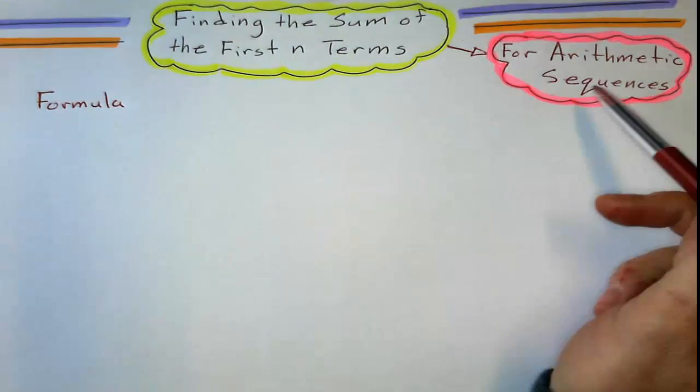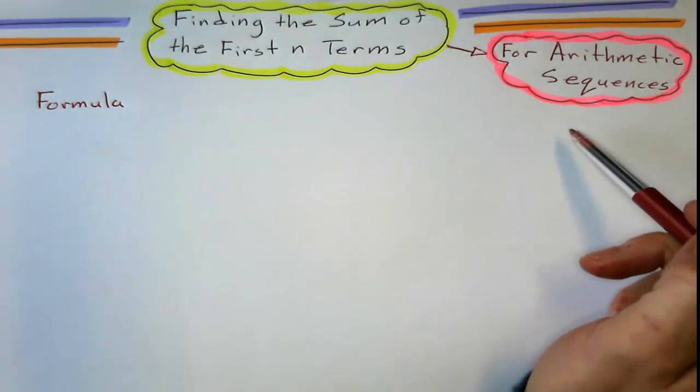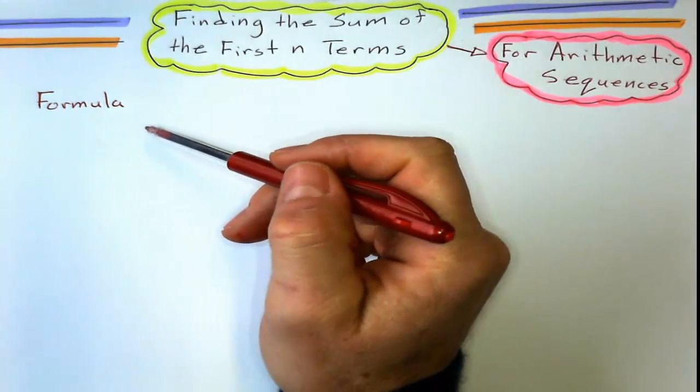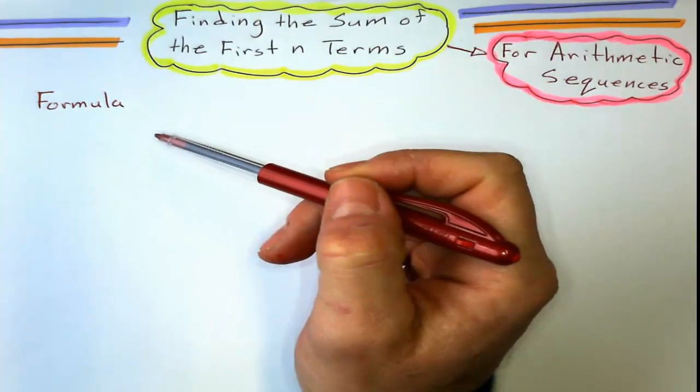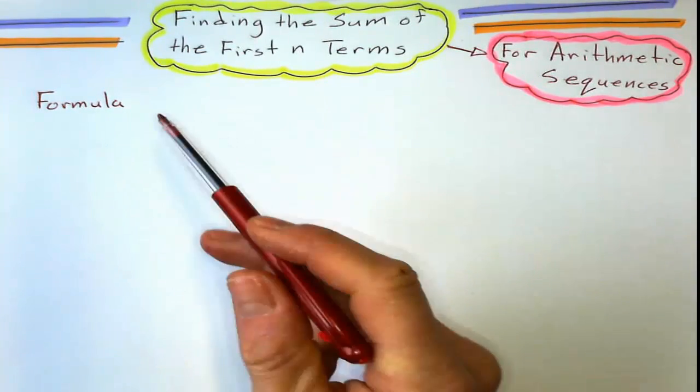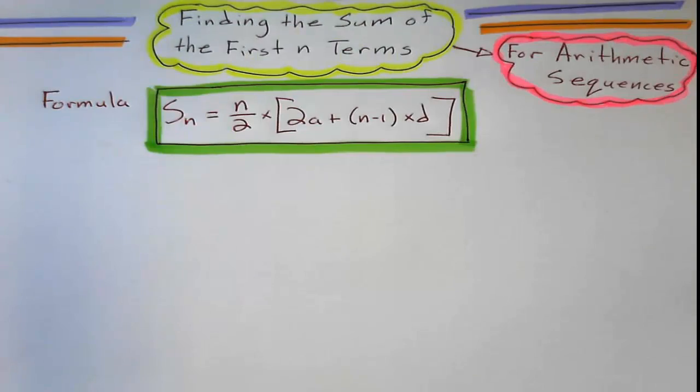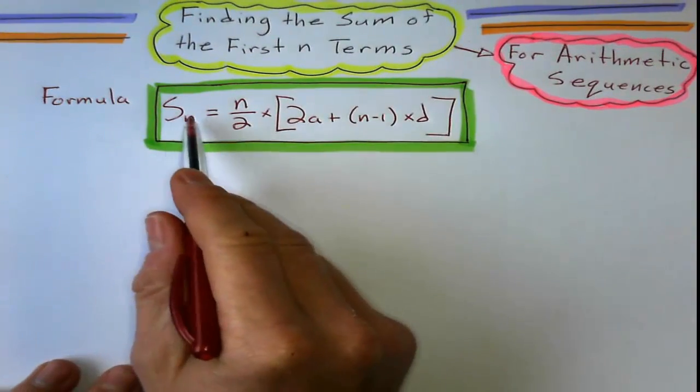Okay, so finding the sum of the first n terms for just arithmetic sequences, we're going to use a formula here, which is for the first term, common difference, and which term I'm looking at, which is going to be the n. So just going over the parts of the formula.